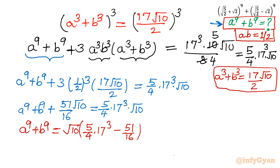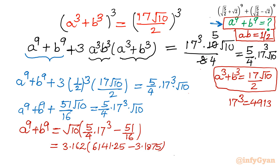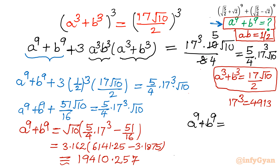Using the calculator: 17³ = 4913, so (5/4) × 4913 = 6141.25, and 51/16 = 3.1875. With √10 ≈ 3.162, the final product gives a⁹ + b⁹ ≈ 194.10257, which is our required answer.